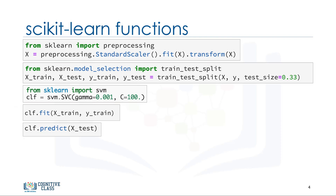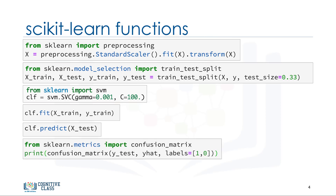Then we can use our test set to run predictions, and the result tells us what the class of each unknown value is. Also, you can use different metrics to evaluate your model accuracy, for example using a confusion matrix to show the results.